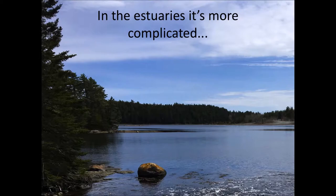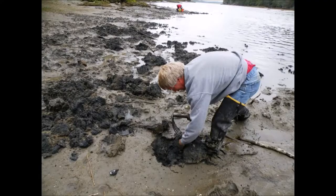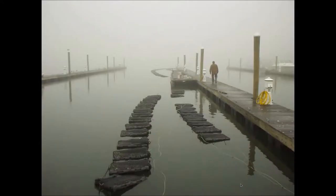Closer to shore in our estuaries in the Northeast, it's more complicated than simply the rise of global CO2 emissions. In these regions there are lots of things that can change carbonate chemistry and pH — lots of different potential drivers we need to be concerned about. When we say drivers, we mean things like nutrient pollution, colder fresher water, and extreme storm events that could be having an effect on acidification. We don't have enough information to understand the different contributions of global atmospheric CO2 versus these other factors.